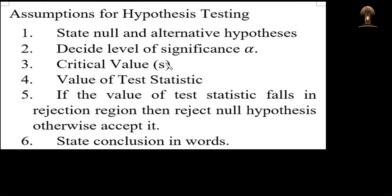The first step is to state our hypothesis: the null hypothesis, which is what we are going to test about the population parameter — about the population mean or population standard deviation. And the alternate hypothesis is what we take against the null hypothesis. The null hypothesis is denoted by H0, and the alternate hypothesis is denoted by HA, or sometimes H1.